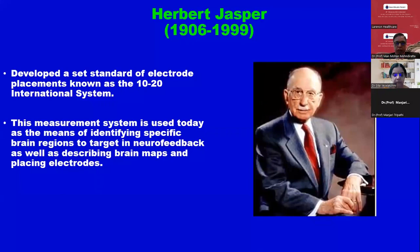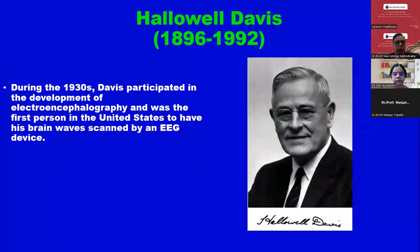10, 20, 20, 20, 20, 20, then 10 — four times 20 and two times 10 makes 100. So every row will total 100%. During the 1930s, Davis participated in the development of electroencephalography and was the first person in the United States to have his brainwave scanned by an EEG device himself.